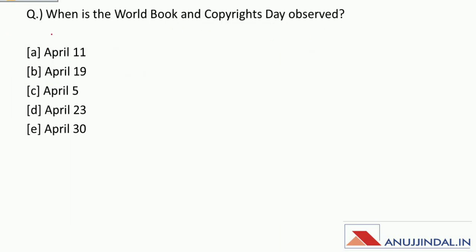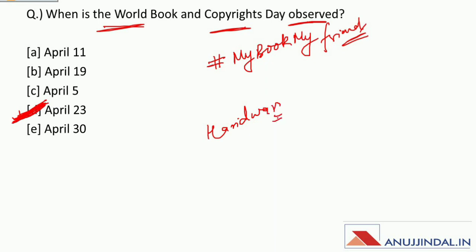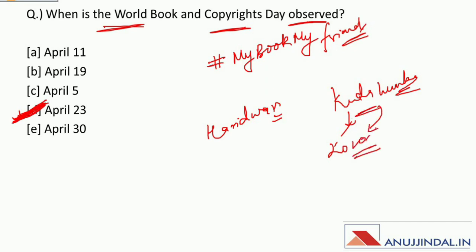When is World Book and Copyright Day observed? It is observed every year on 23rd April. On this day, HRD Minister Mr. Ramesh Pokhriyal Nishank launched a hashtag on Twitter called 'My Book, My Friend.' Kuala Lumpur was selected as the World Book Capital for the year 2020.